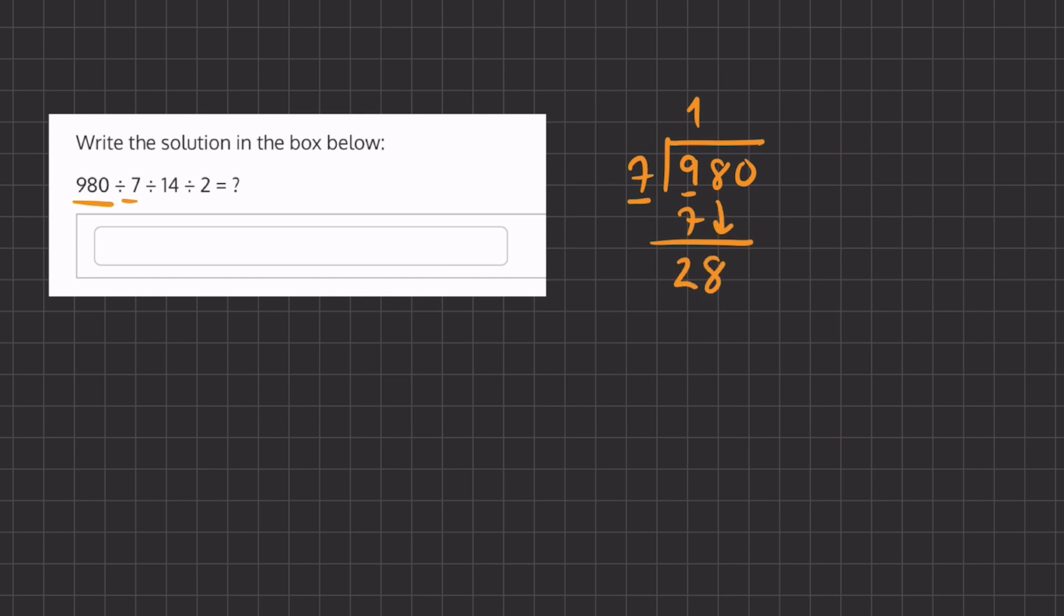Now we will carry down our 8 and ask ourselves how many times does 7 go into 28, and that is 4 times. 4 times 7 is 28, and we'll get a remainder of 0.